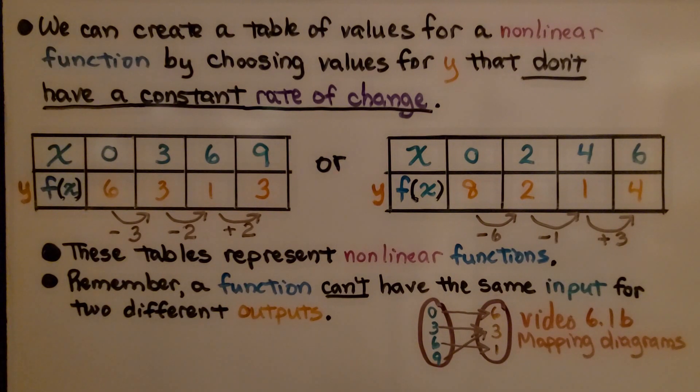We can create a table of values for a nonlinear function by choosing values for y that don't have a constant rate of change. Here we have x, and we can see it's skip counting by threes.